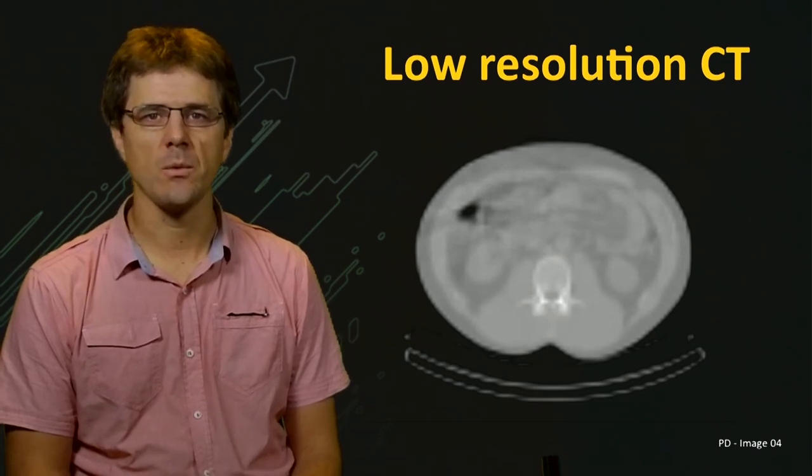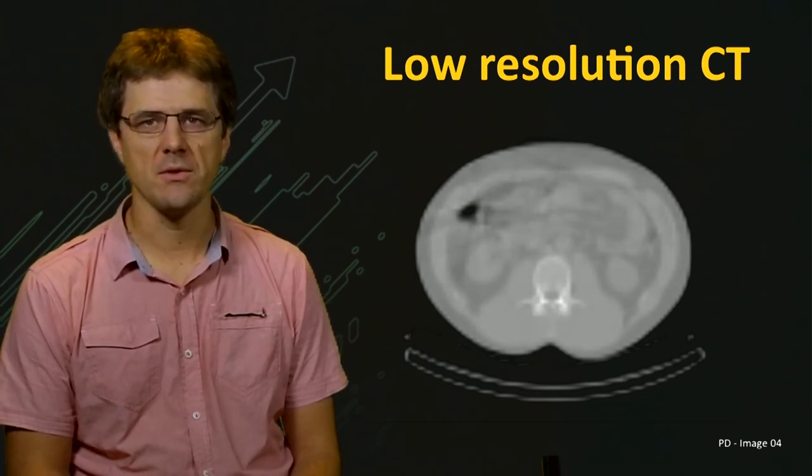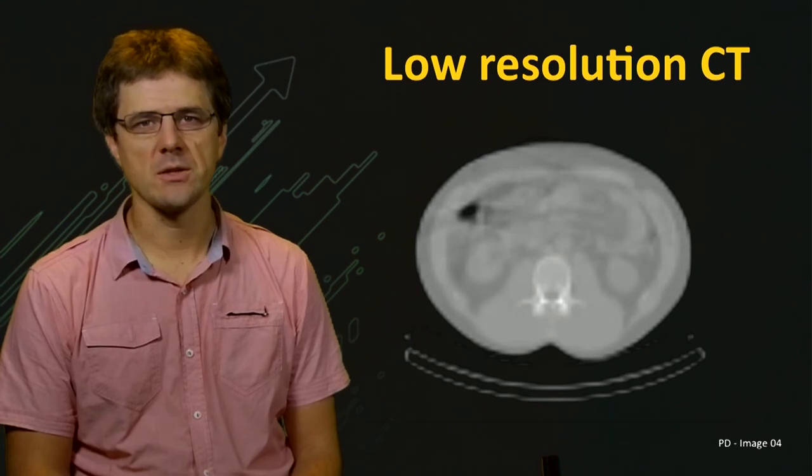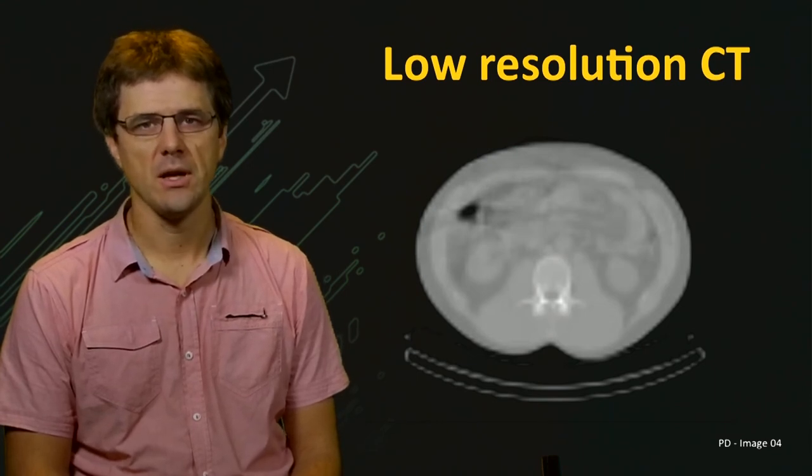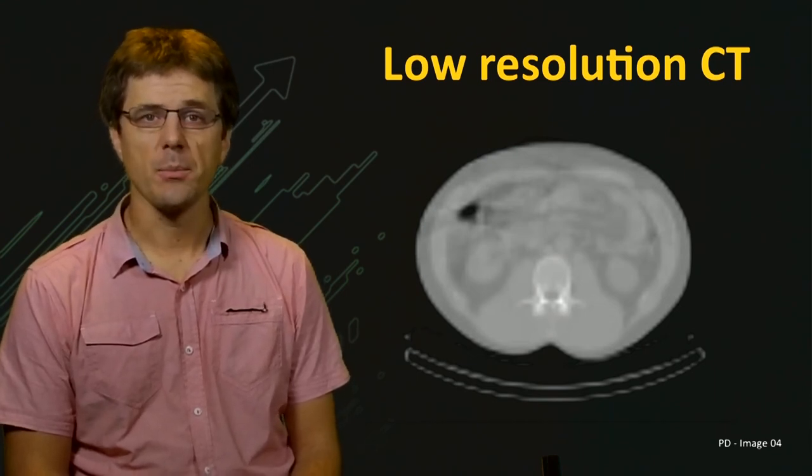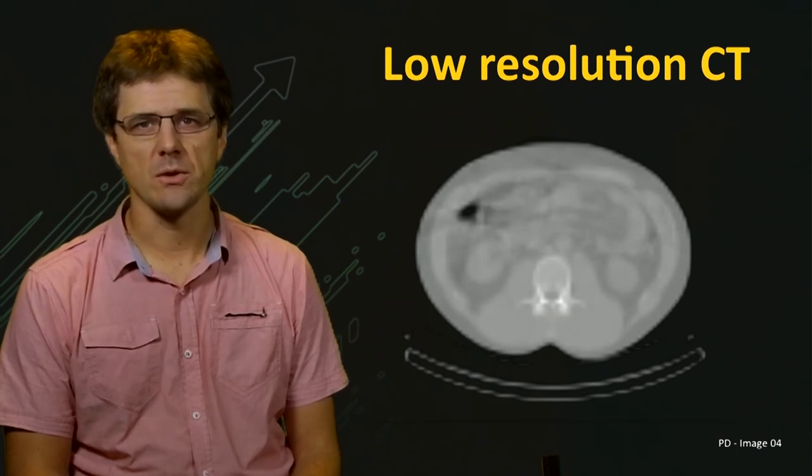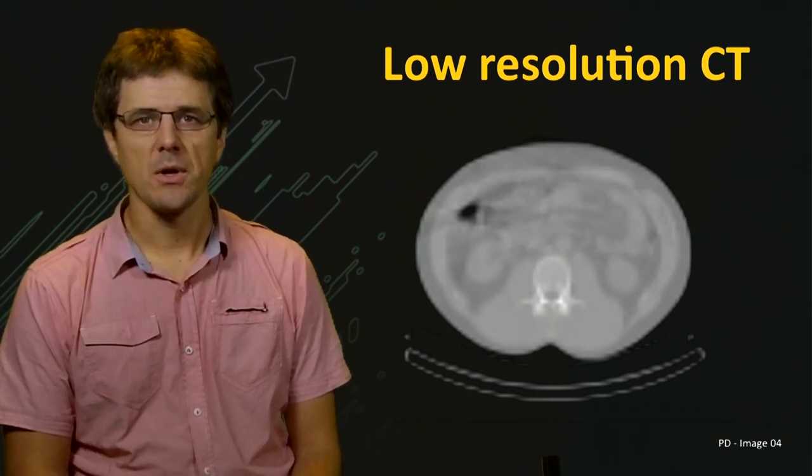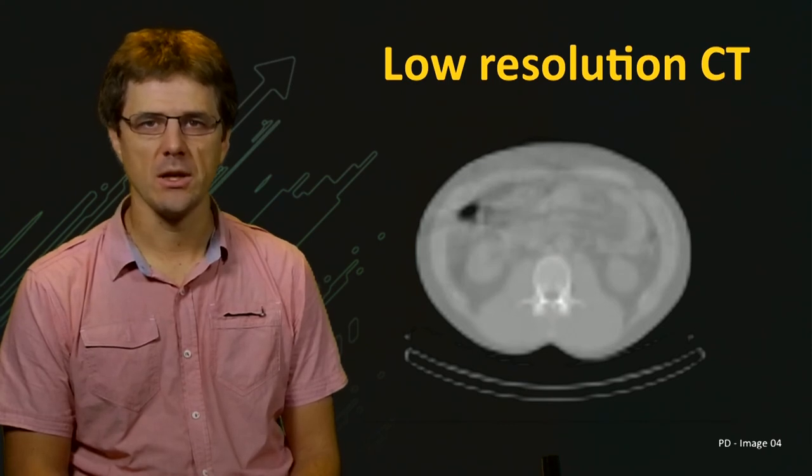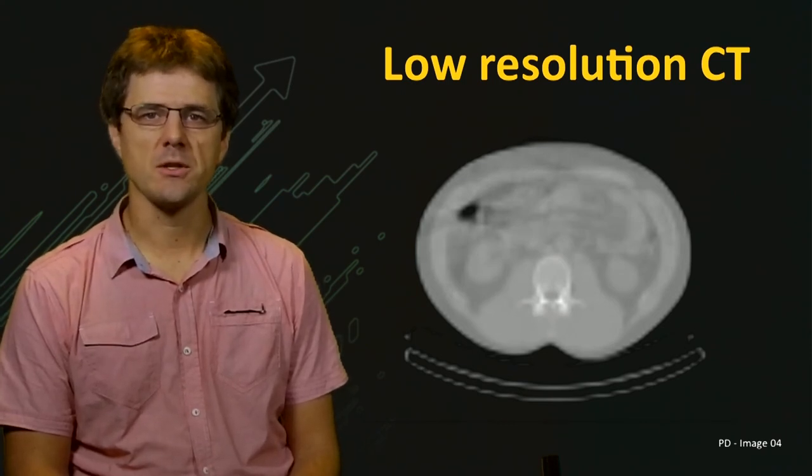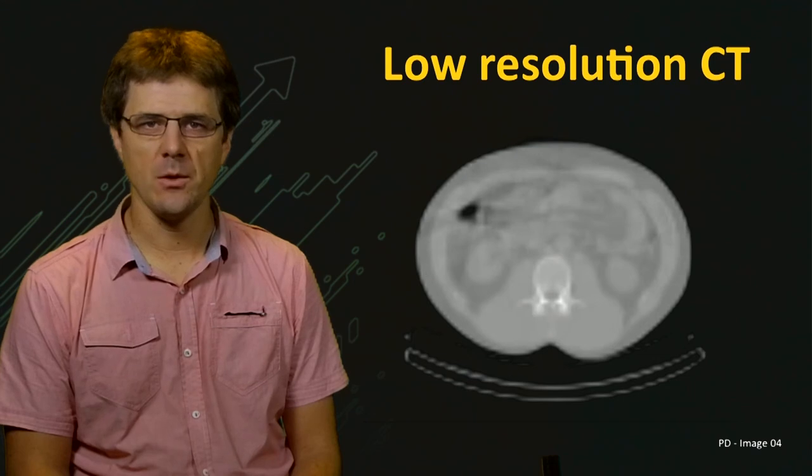CT X-rays are typically in the 100 to 140 keV range, and PET gamma rays are at 511 keV. Given their higher energy, the PET gamma rays will penetrate tissue and obstructions more easily, but will still be attenuated albeit to a lesser degree. This difference in attenuation is modeled by scaling the CT attenuation map by a calibrated scaling factor.